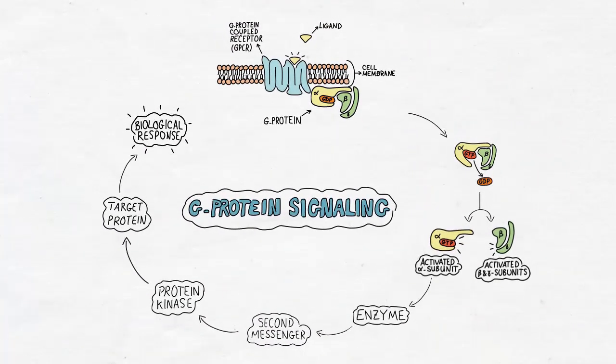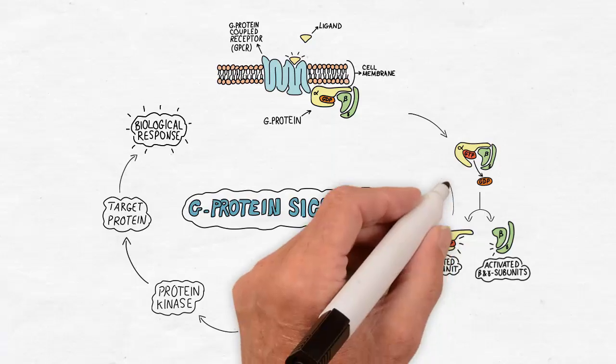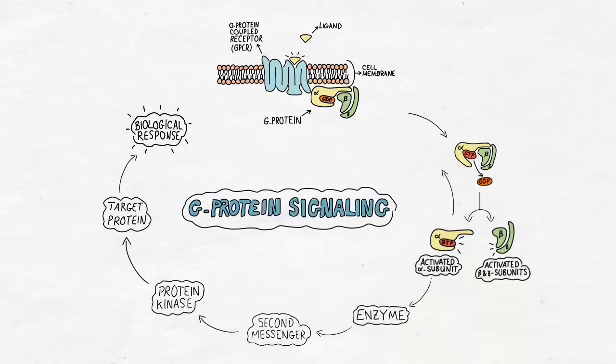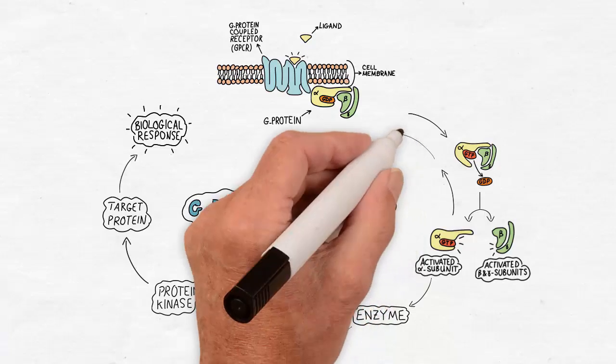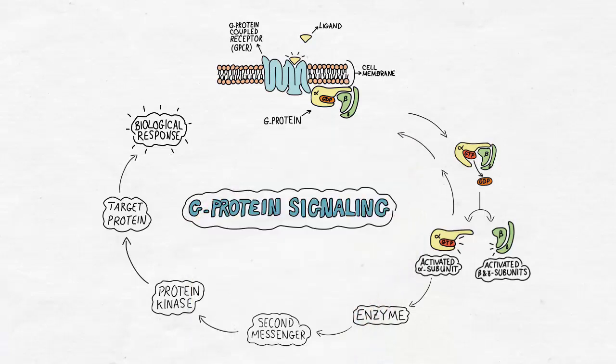In general, the G protein signaling pathway could be switched off in different ways. When the ligand is no longer present, the receptor reverts to its resting state, and the G protein exerts its GTPase activity to hydrolyze GTP into GDP, and the alpha subunit will reassociate with beta and gamma subunits to stop the signaling process.